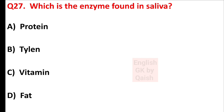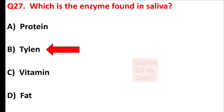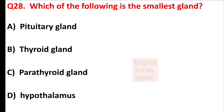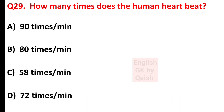Which enzyme is found in saliva? Answer is option B — amylase. Which of the following is the smallest gland? Answer is option A — pituitary gland. How many times does the human heart beat? Answer is option D — 72 times per minute.